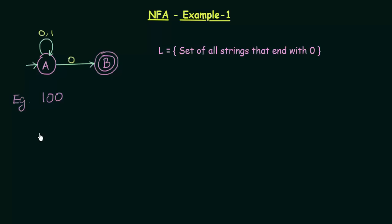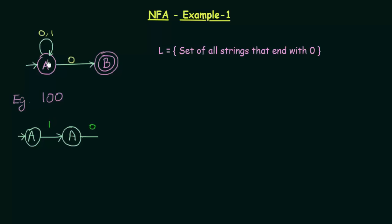We always start with the starting state, which is state A. I start from state A and the first input is 1. On getting input 1, A goes to itself. Then my next input is 0. On getting input 0, A goes to A itself and also to B — there are two transitions: A can go either to A itself or to B.